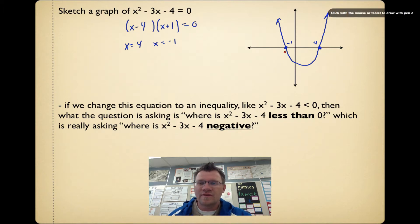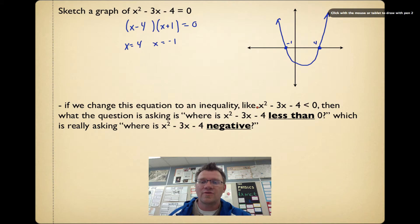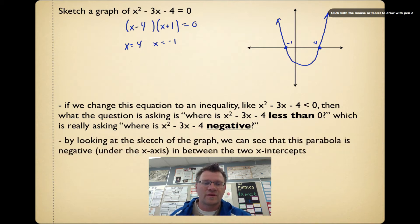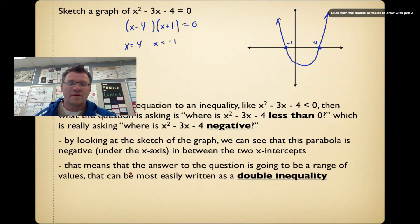It's clear to see that this parabola is negative in between negative 1 and 4. That's where this parabola is underneath the x-axis. When they say negative, that's what they mean — where is this thing underneath the x-axis? By looking at the sketch, we see that this parabola is negative between the two x-intercepts.